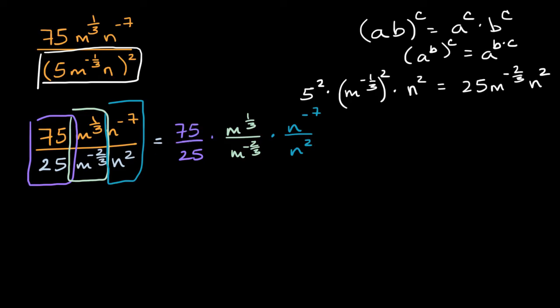Now 75 over 25, we know what that is, that's going to be equal to 3. But how do we simplify this right over here? Well here, we can remind ourselves another exponent property. If I have a to the b over a to the c, this is going to be the same thing as a to the b minus c power.